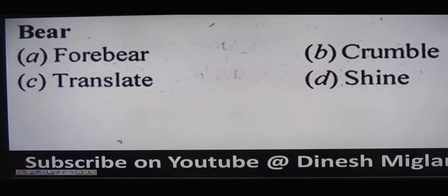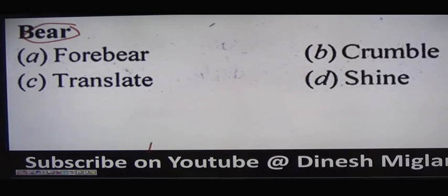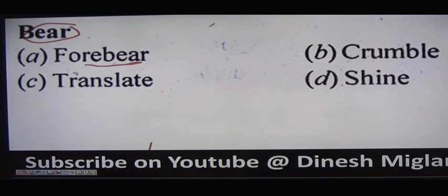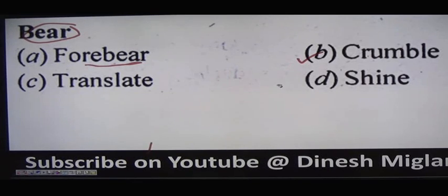Next word: 'bear.' Bear means to carry or to support something — here it is used in the sense of carrying or supporting, not the animal. 'Forbear' is used for our ancestors — anyone or anything relating to our ancestors. Option B is 'crumble,' meaning to break. Bear means to support or carry, and crumble means to break — so crumble is our answer. Option C is 'translate,' meaning to change.